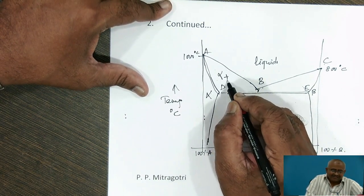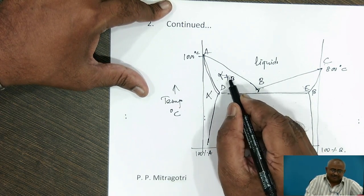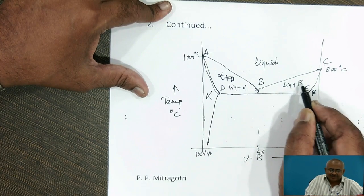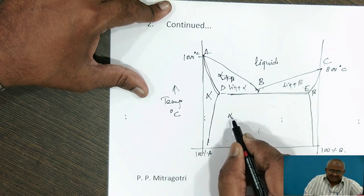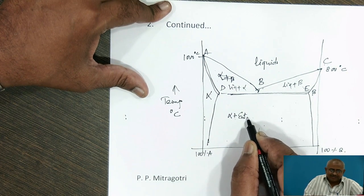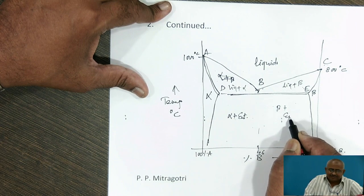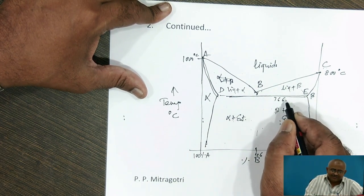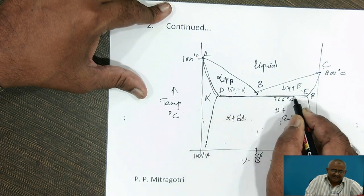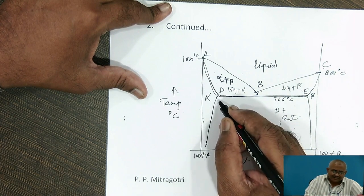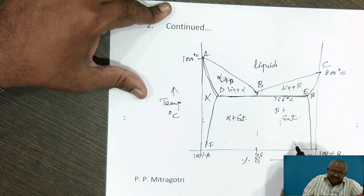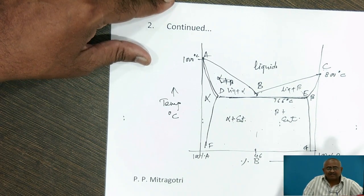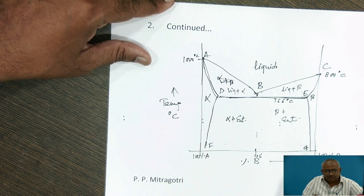In this region there will be liquid plus alpha. In this region there will be liquid plus beta. In this region there will be alpha plus eutectic, while in this region there will be beta plus eutectic. This temperature is 766 degrees Celsius. Line DF and EG are solvus lines, which indicate lines of limiting solubility in solid state.